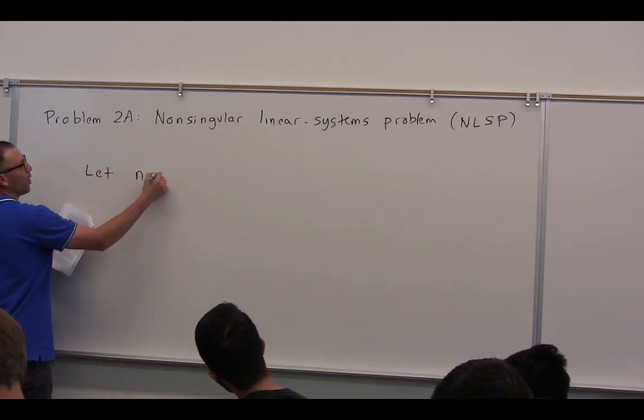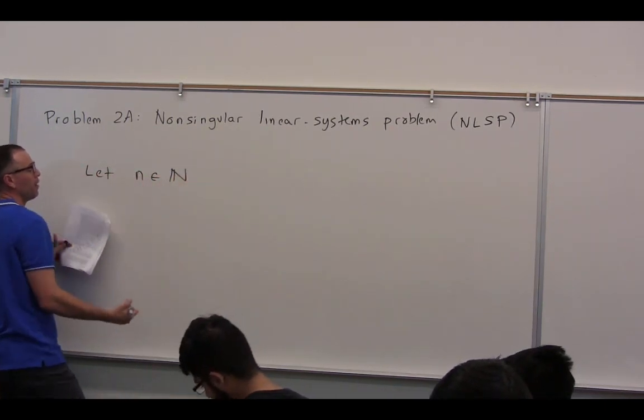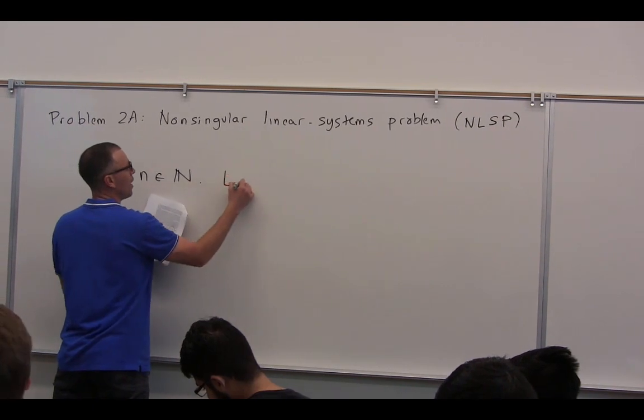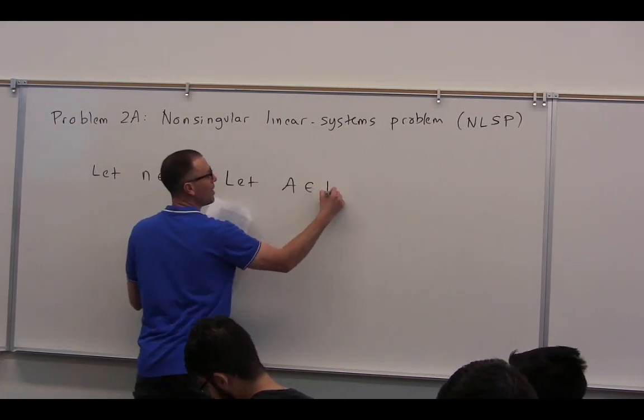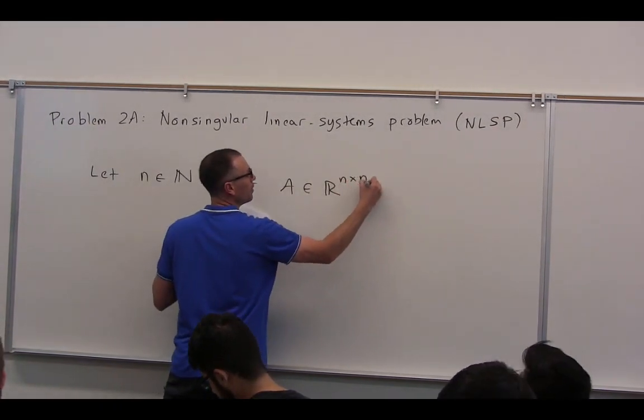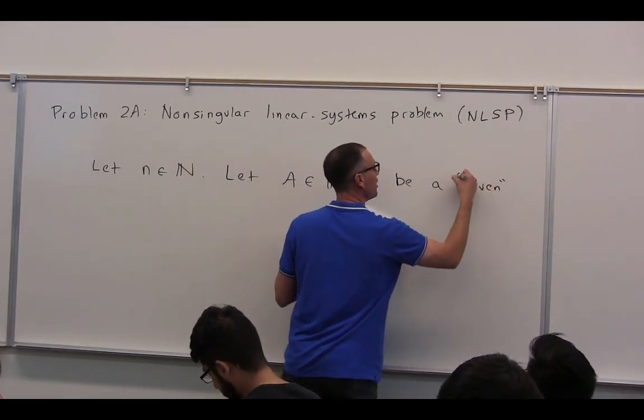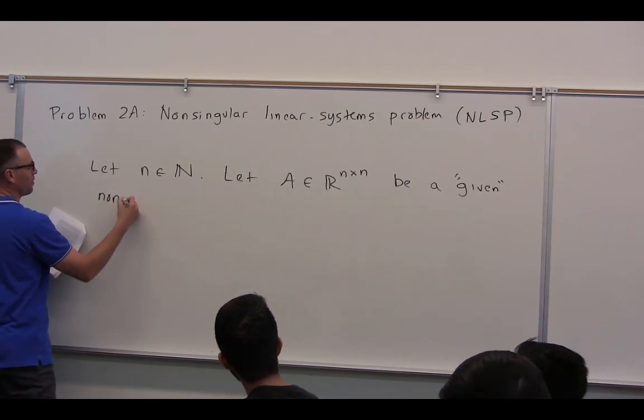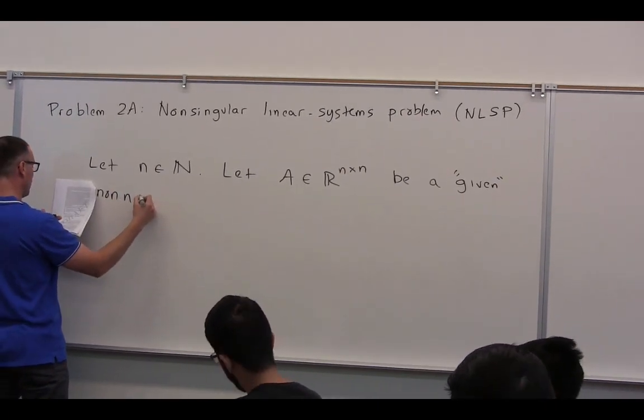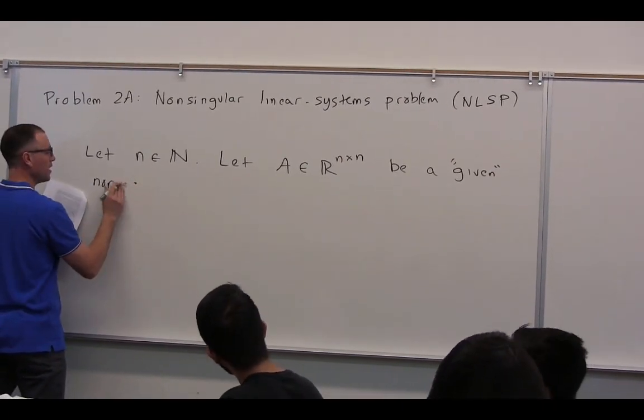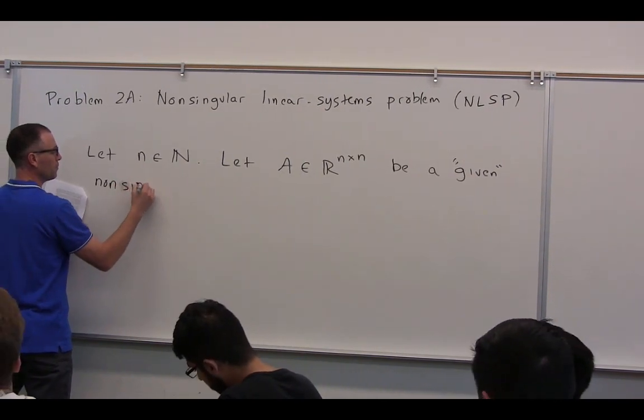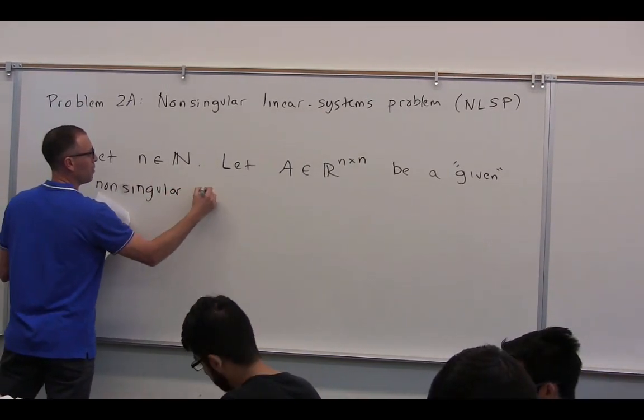And in this case, we're going to say let n be an element of the natural numbers. And then we're going to let A be a square matrix, a given, uh-oh, I just sinned. It's never felt so good to sin. Non-singular matrix.